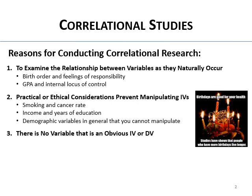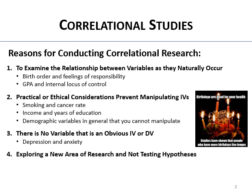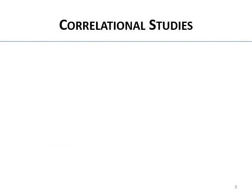Sometimes you use correlational research because there's no obvious independent or dependent variable — you just want to know if two things are related. Depression and anxiety, for example: which one causes which? Who knows. We just want to know if there's a relationship. We also use it when exploring a new area of research, not really testing hypotheses, but doing exploratory research to see what's related and what factors might be worthy of further study.